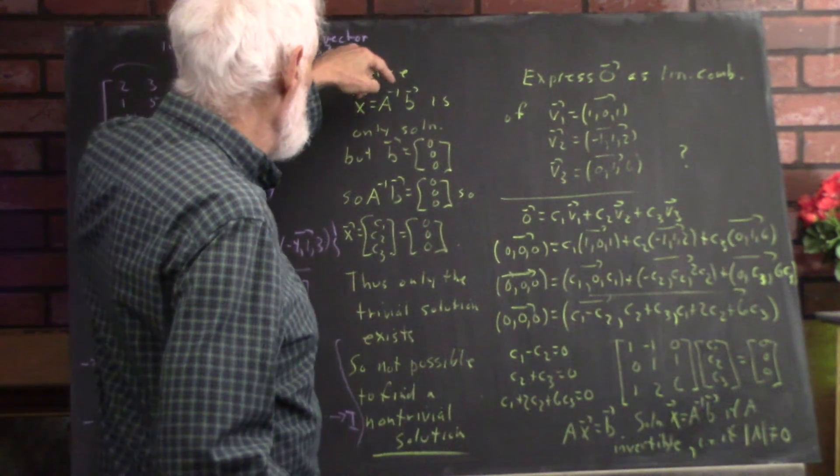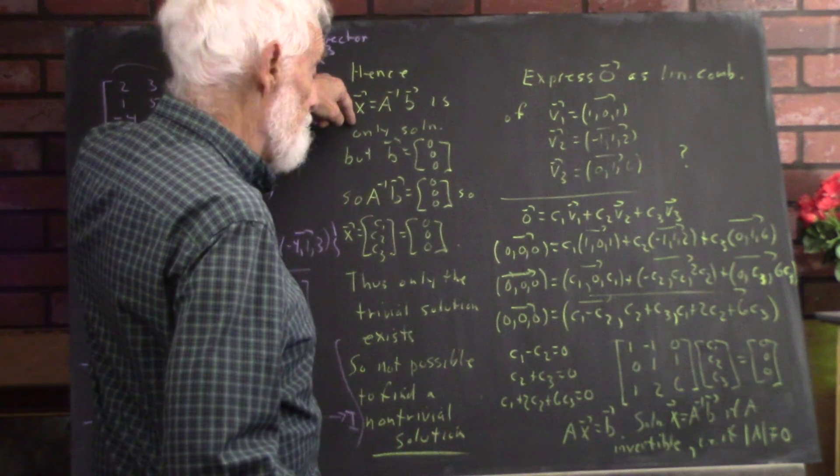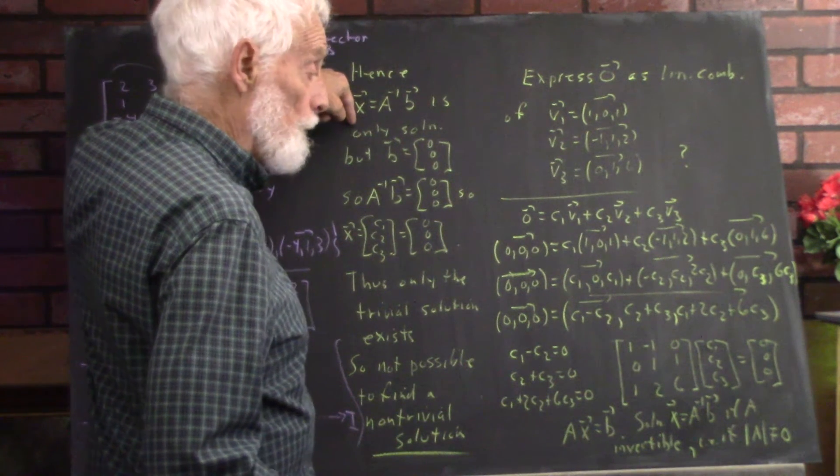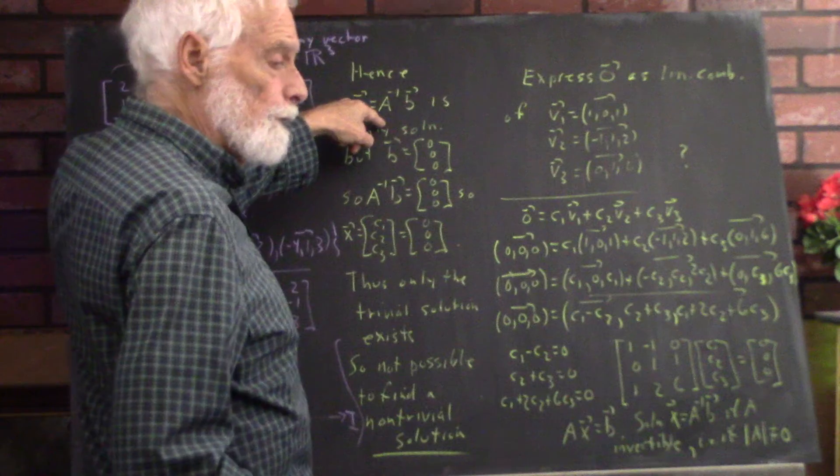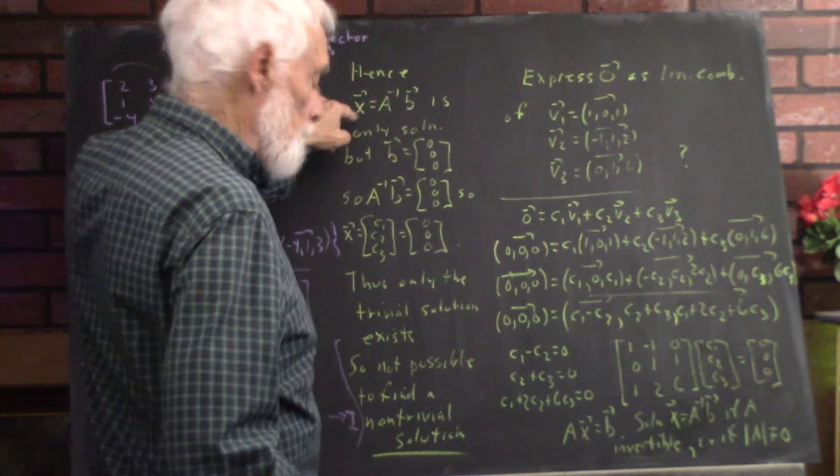So, x equals a inverse b is the only solution to the equation because if you have an inverse matrix, this is a unique solution.